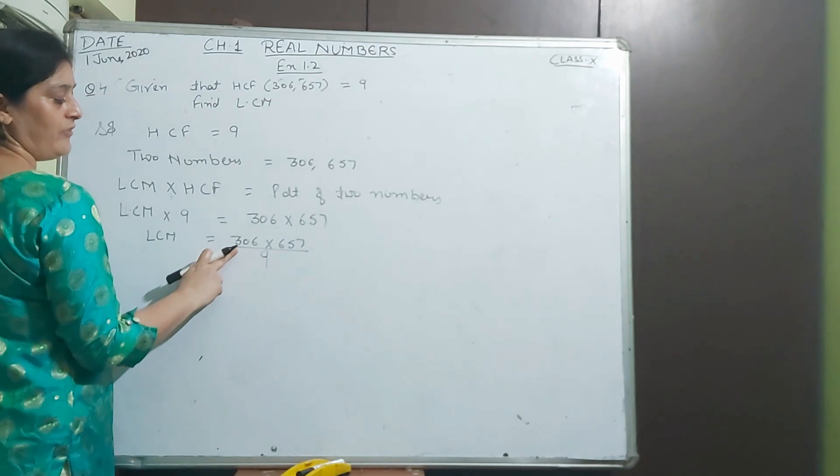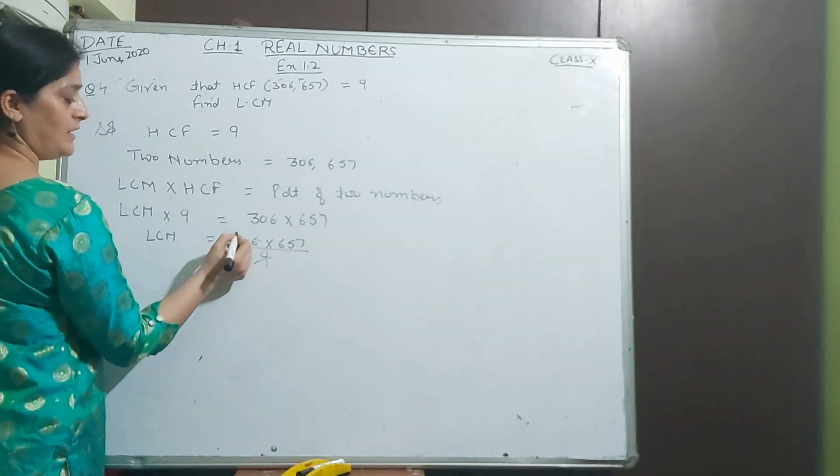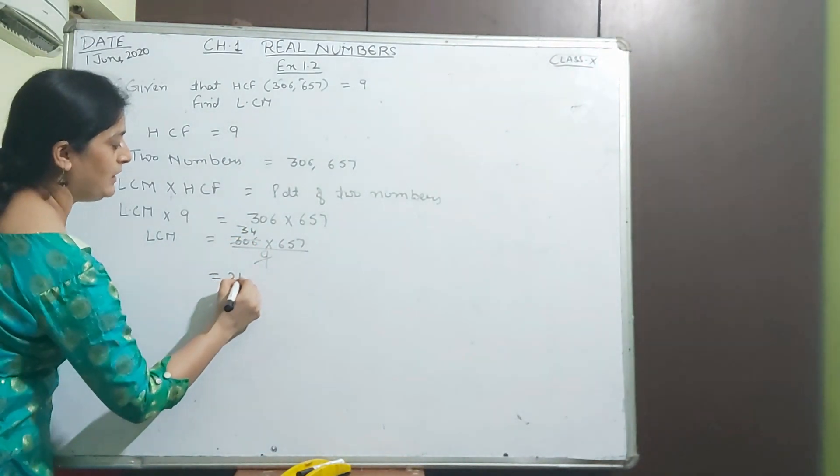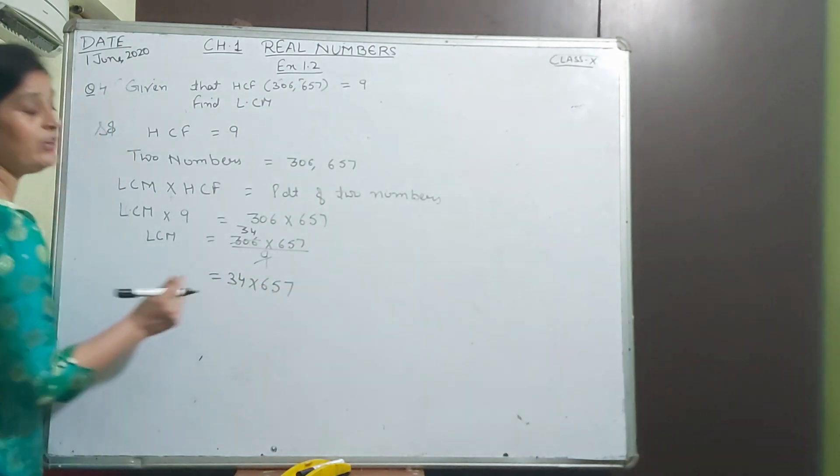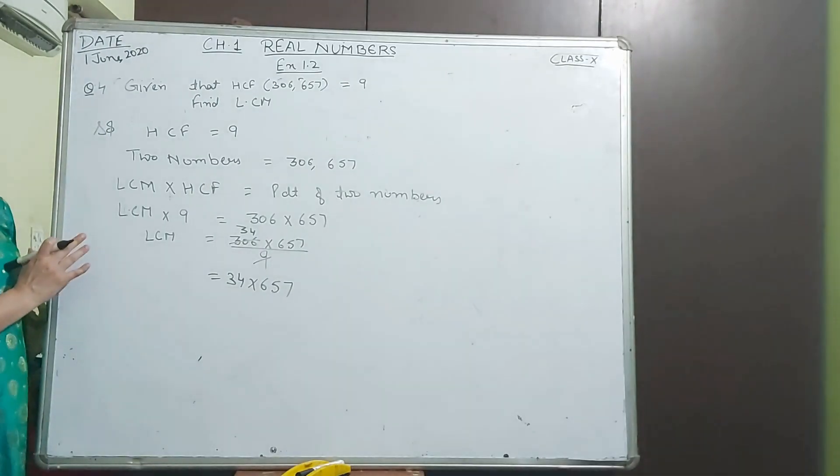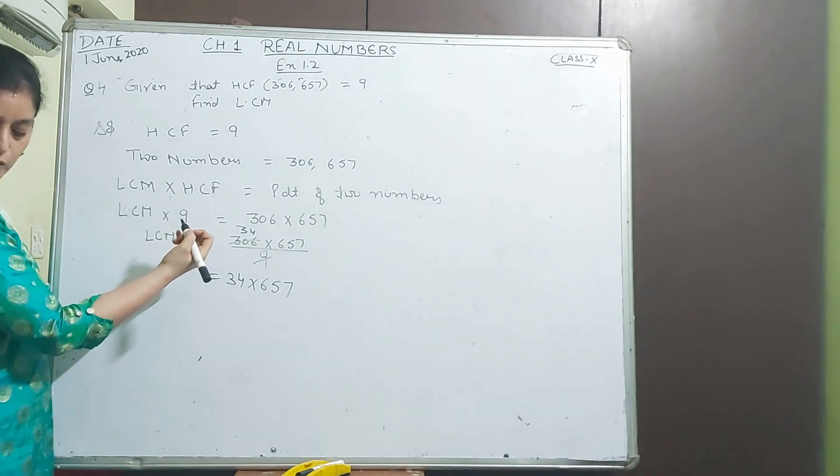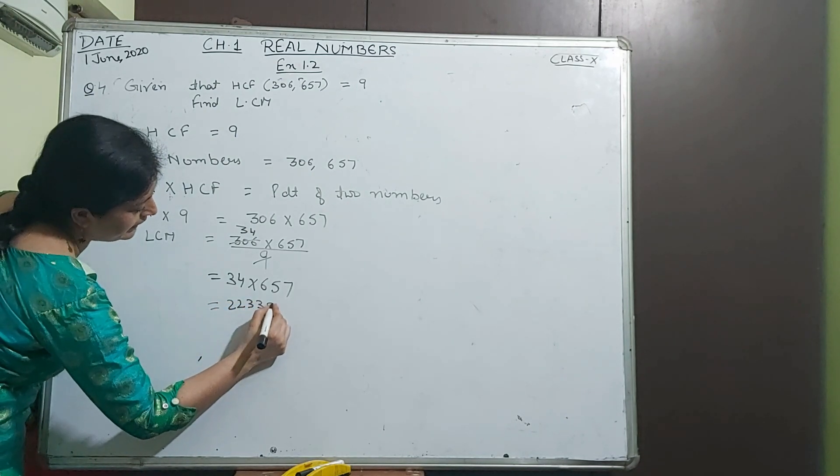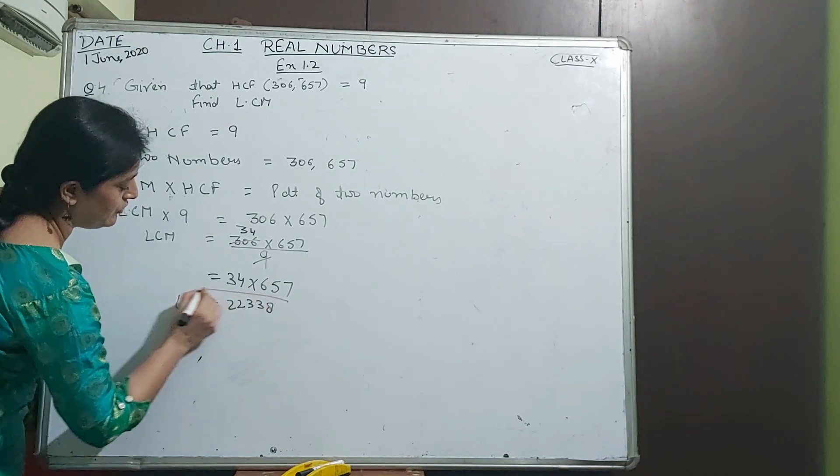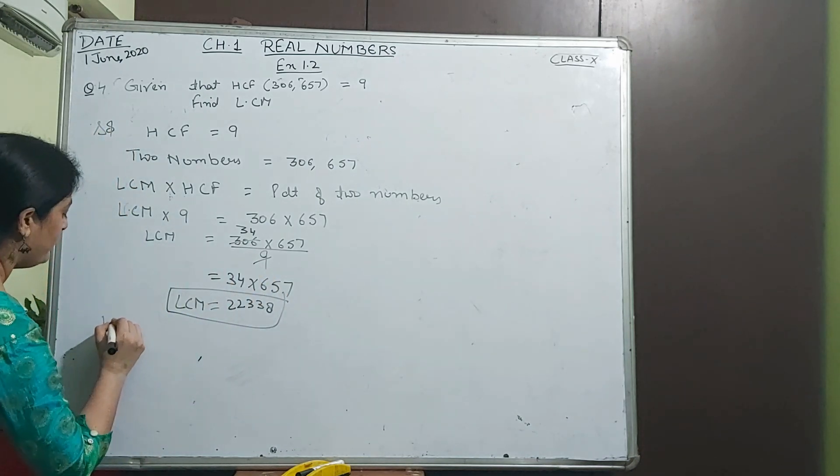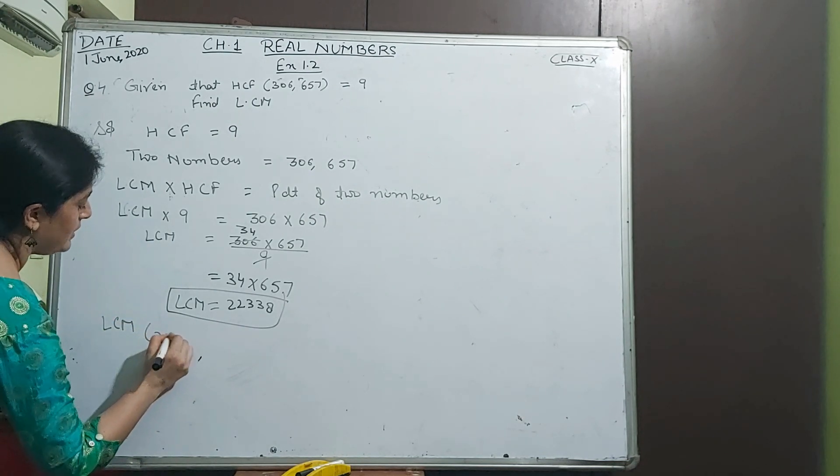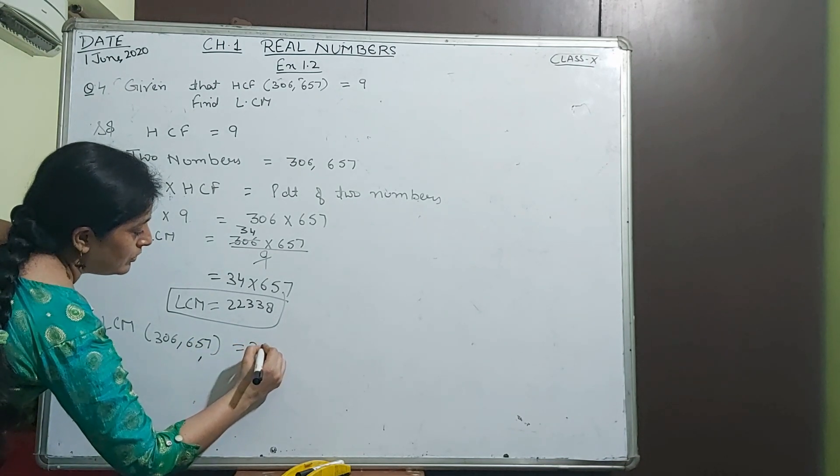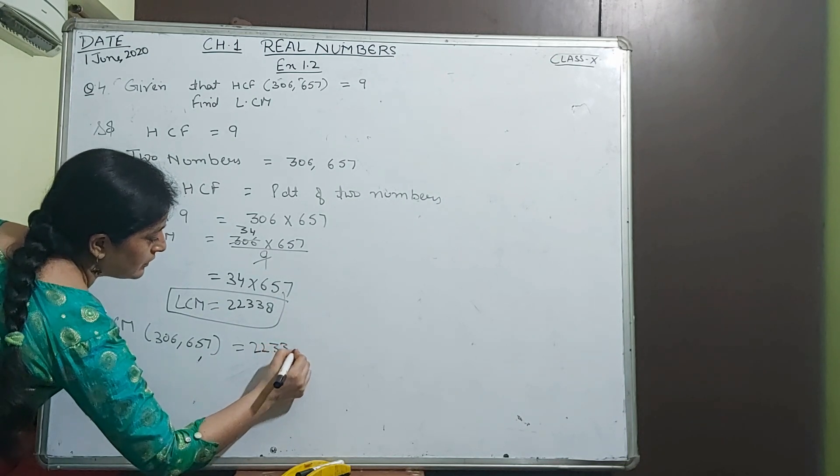306 divided by 9. 9 times 3 is 27. 9 times 1 is 9, 9 times 3 is 27, carry 3 to get 36. 9 times 4 is 36. Multiply 34 into 657 and you will get the LCM. When you multiply these numbers you get 22338. This is the LCM of 306 and 657, equal to 22338.